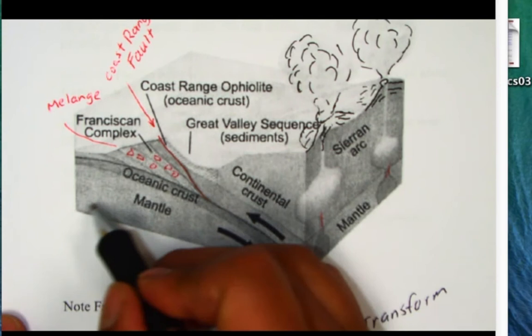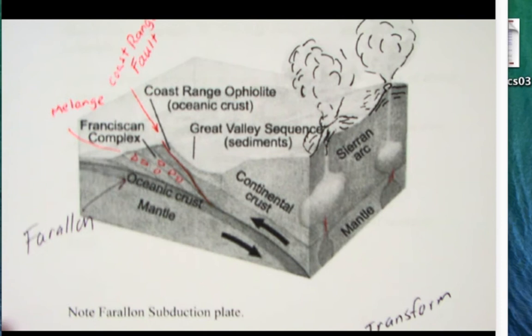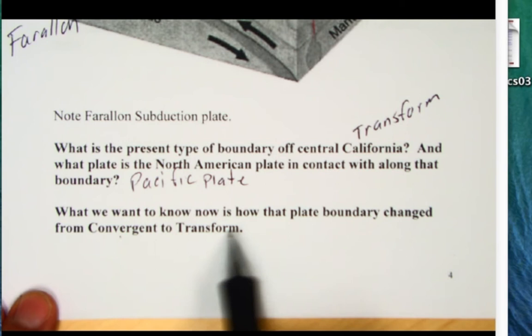Remember in Mesozoic time, this ocean plate, that's the Farallon plate and the Pacific plate's way offshore over here, it's not even in contact with California. But now we're changing the boundary so something has to enable us to go from a convergent to a transform boundary.